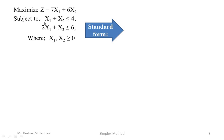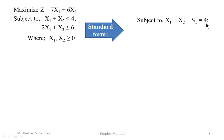In simplex method, first we need to express the given linear programming problem into standard form. Now if you see the first constraint, x1 plus x2 is less than or equal to 4. To convert this less than or equal to sign into an equal to sign, we need to add a slack variable on the left hand side of this constraint, so that this less than or equal to sign can be written as equal to sign. So we can write the first constraint as x1 plus x2 plus s1 is equal to 4.